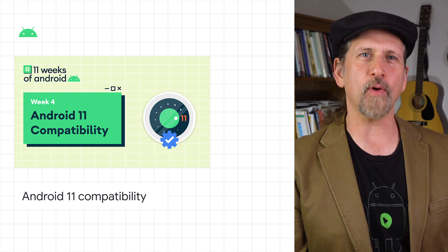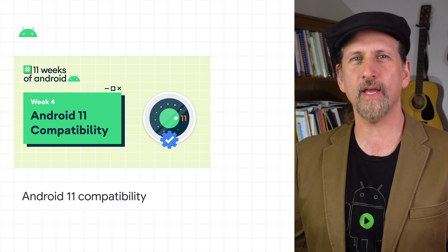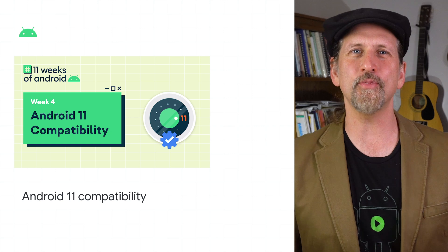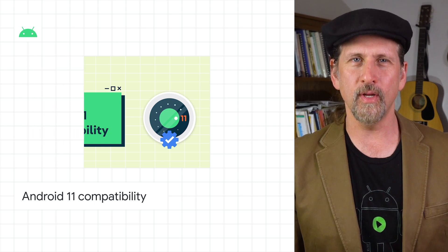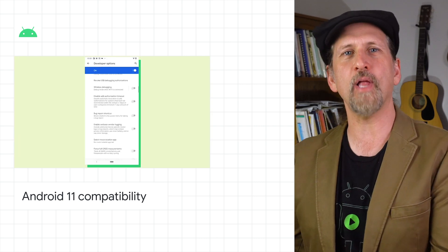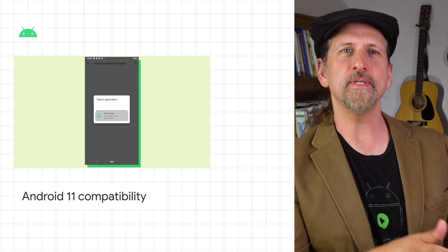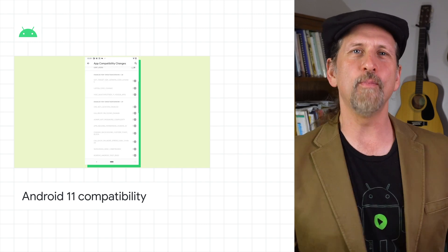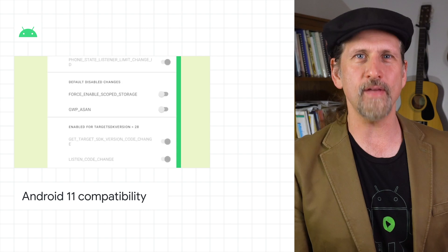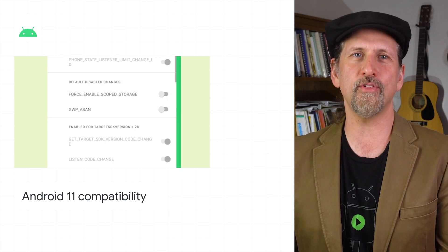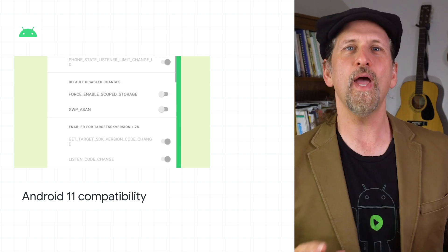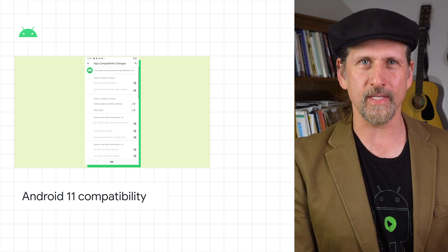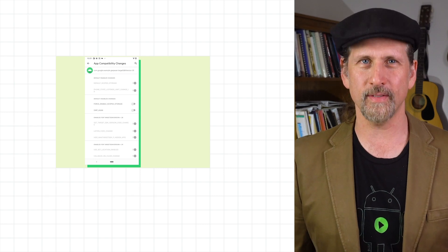We released a compatibility framework as part of Android 11 to help minimize the impact of platform updates and make it easier for apps to stay compatible. You can force enable or disable platform changes individually, either from a device's developer options or using ADB. To learn more about how to test your app against Android 11, using test matrices in Android Studio 4.2, and best practices for keeping your app compatible, check out the post and the rest of the content from the Android 11 compatibility week.